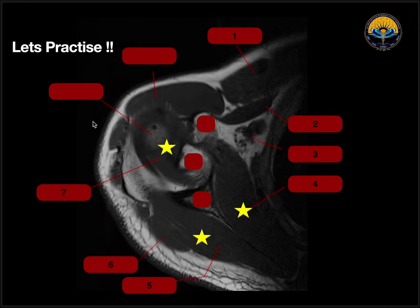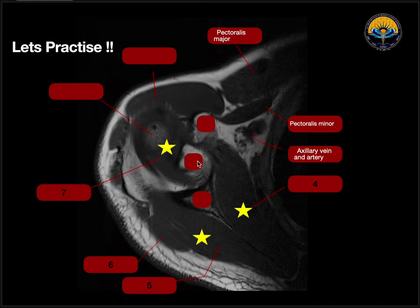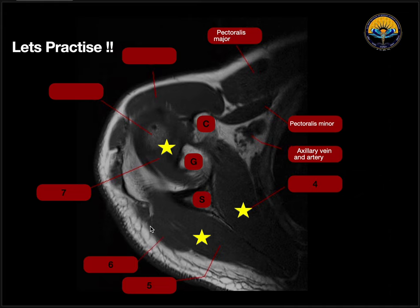Let's see the axial sections. On this axial section, the first anterior muscle we can see is pectoralis major. Just behind it, this small muscle will be pectoralis minor. This will be the axillary artery and vein. We can see the humeral head, and above the humeral head, we can see the insertion of supraspinatus. This will be the scapula, and due to the scapula, we can see the subscapularis muscle, the infraspinatus muscle, the supraspinatus muscle, and the deltoid muscle.